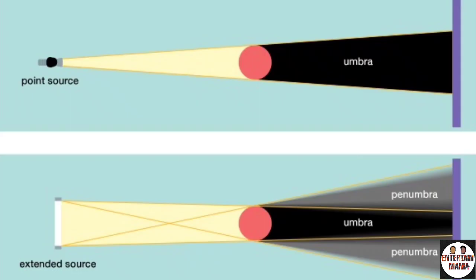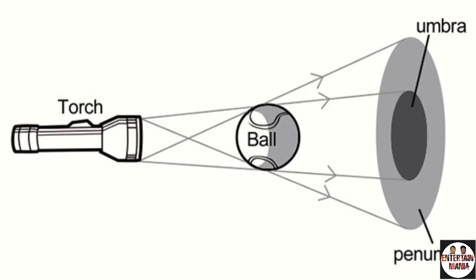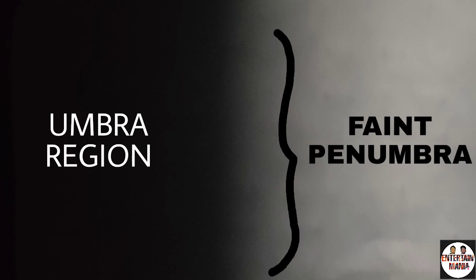But light coming from a comparatively large source of light cast a shadow which has two regions, namely umbra and penumbra. The penumbra region is very faint and hardly visible to our eyes.